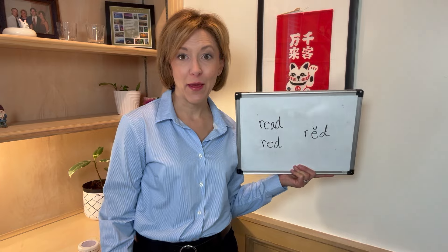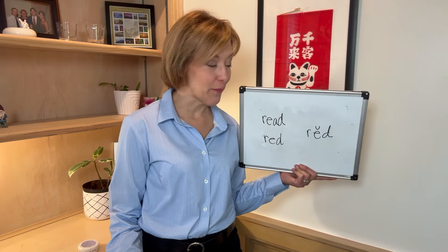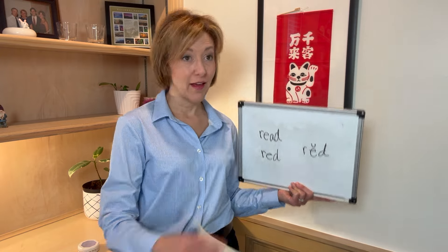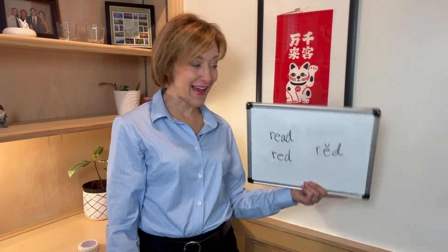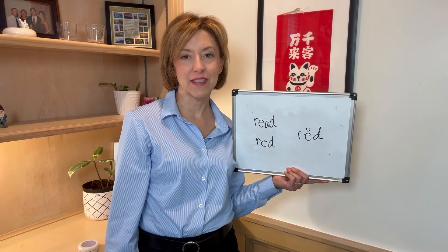Hi there, it's Jennifer from Tarle Speech with your Two for Tuesday homophone lesson. Homophones are words that are pronounced exactly the same way — they just have different spellings and different meanings. Our words today are 'read,' the past tense of 'to read,' and 'red,' the color in my picture. To say these words correctly, there are three little sounds.